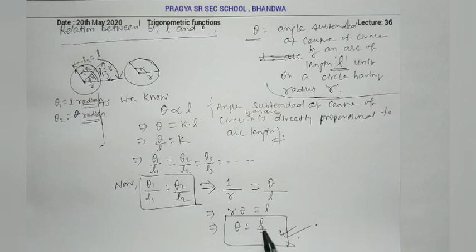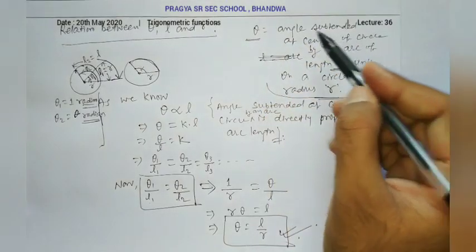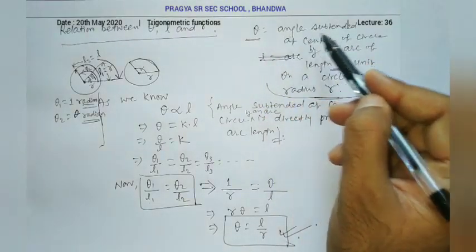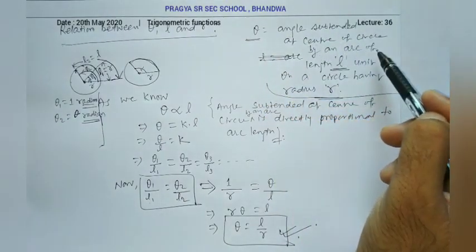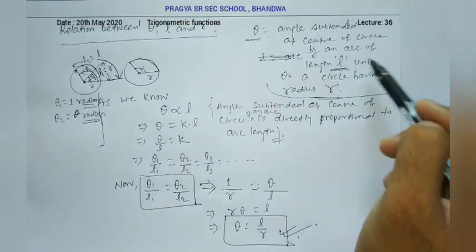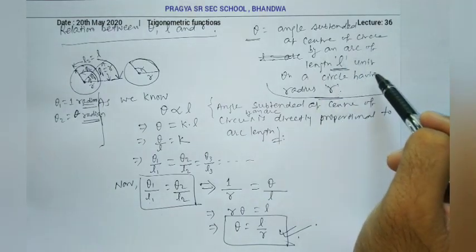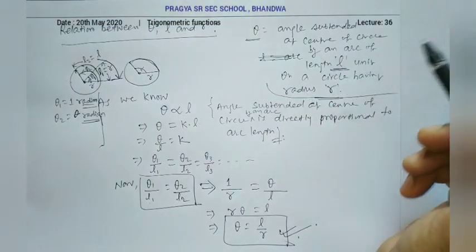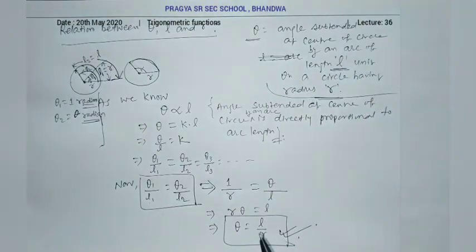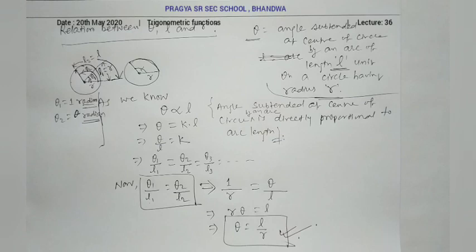Here theta is the angle subtended at center of the circle by an arc of length L unit on a circle having radius R. L is the arc length and R is the radius of that circle. Remember this relation.